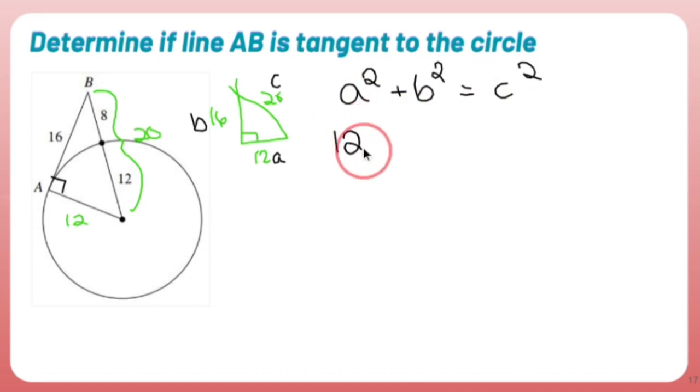12 squared plus 16 squared has to equal 20 squared. 12 squared is 144. 16 squared is 256. That's got to equal 400.